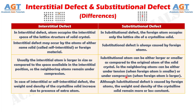And difference number 4. In case of interstitial or self-interstitial defect, the weight and density of the crystalline solid increase due to the presence of an extra atom, whereas although substitutional defect is caused by foreign atoms, the weight and density of the crystalline solid remain more or less constant.